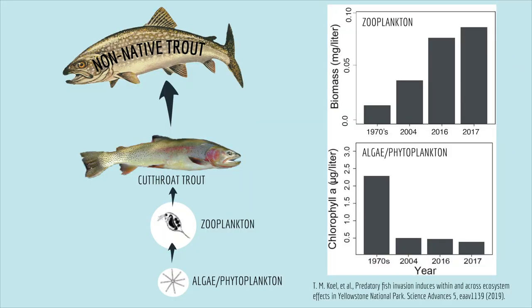Since there are fewer cutthroat trout eating zooplankton, the amount of zooplankton has gone up over time. And since zooplankton eat algae, more zooplankton has meant less algae over time. So less algae means the water is clearer. The introduction of one fish species in this lake, through all the connections in the food web, led to clearer water.